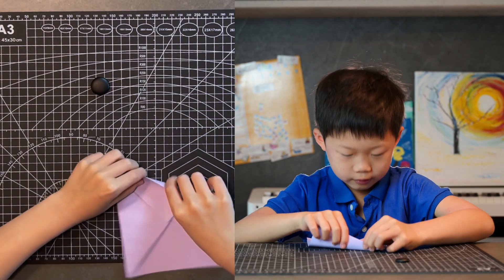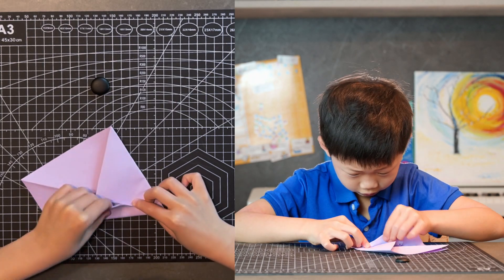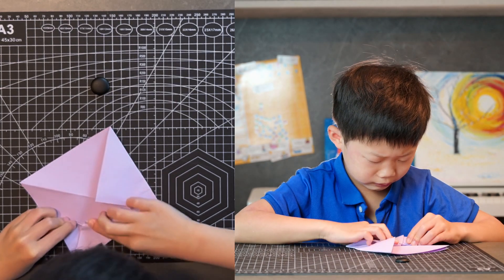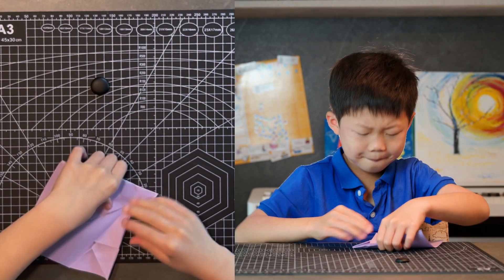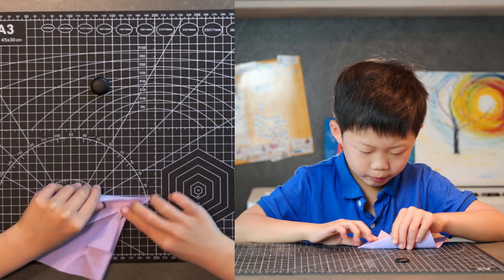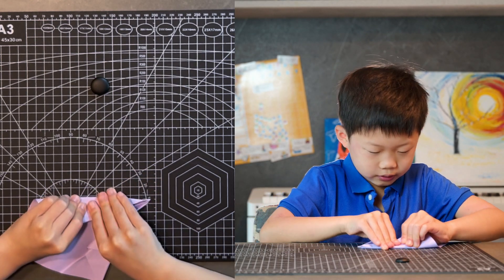And fold it to center again and then check that crease and fold it out from that point. Do the same thing on your other side.